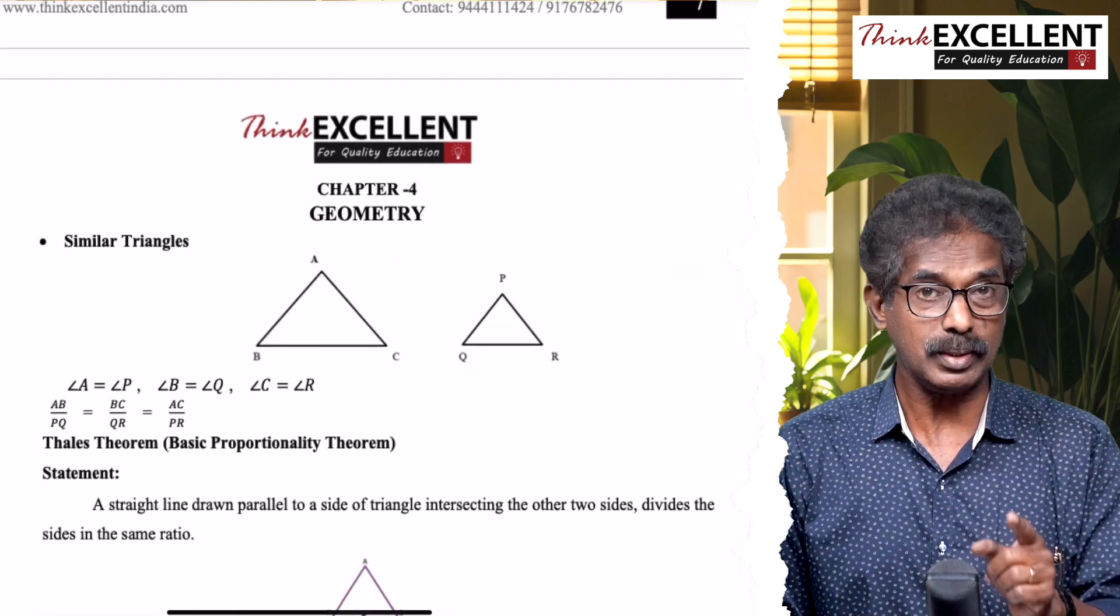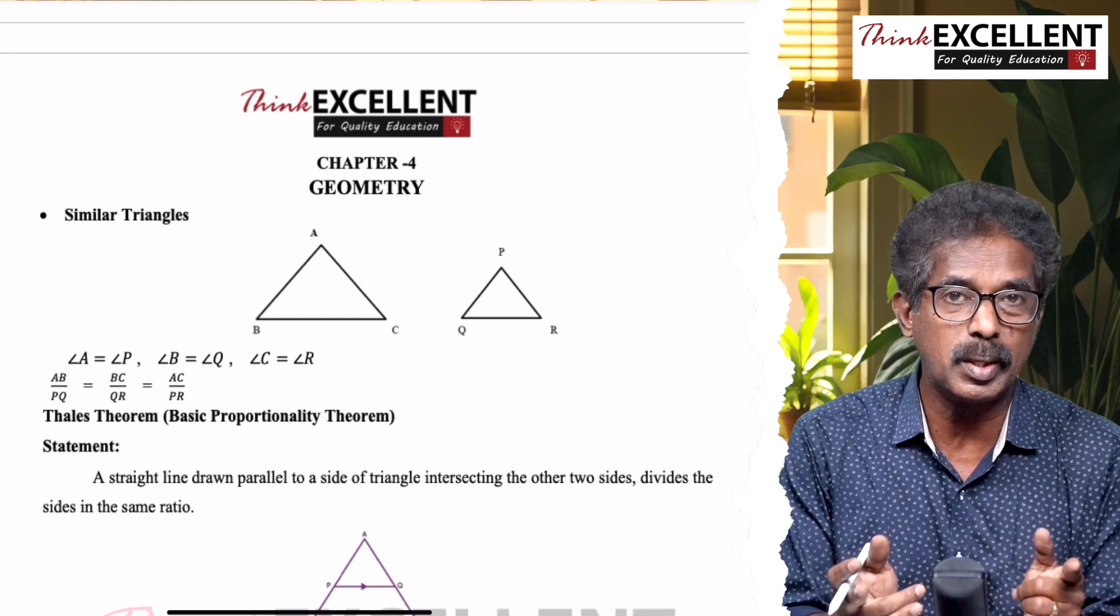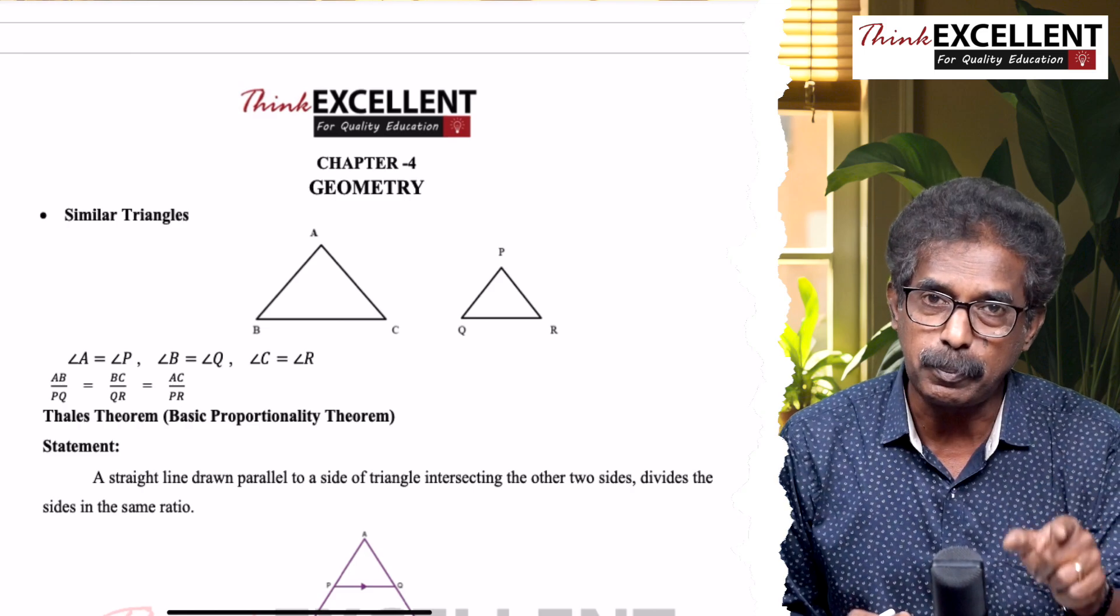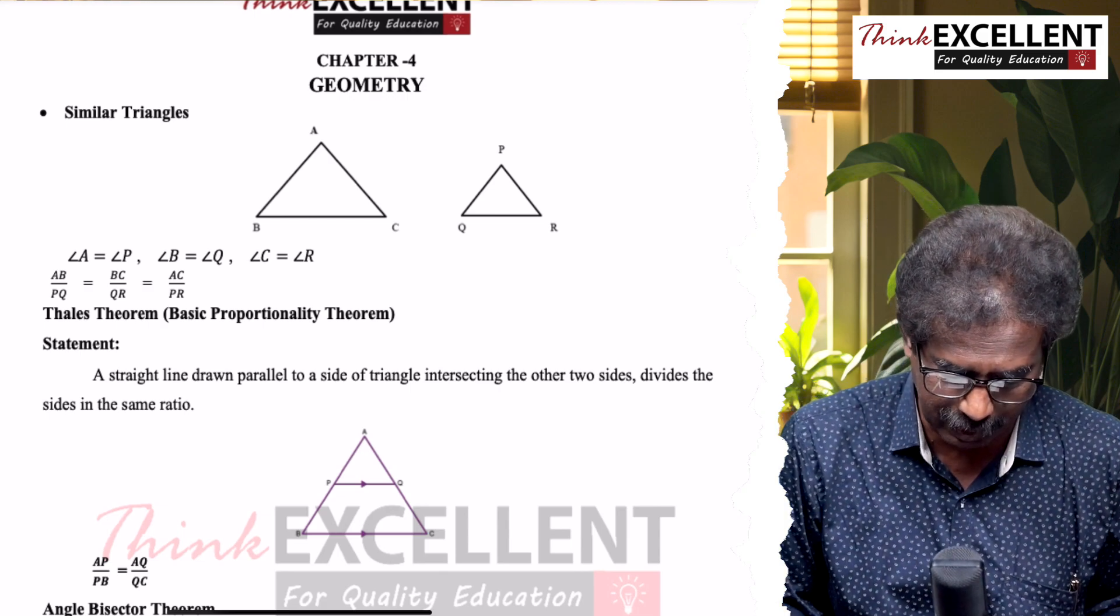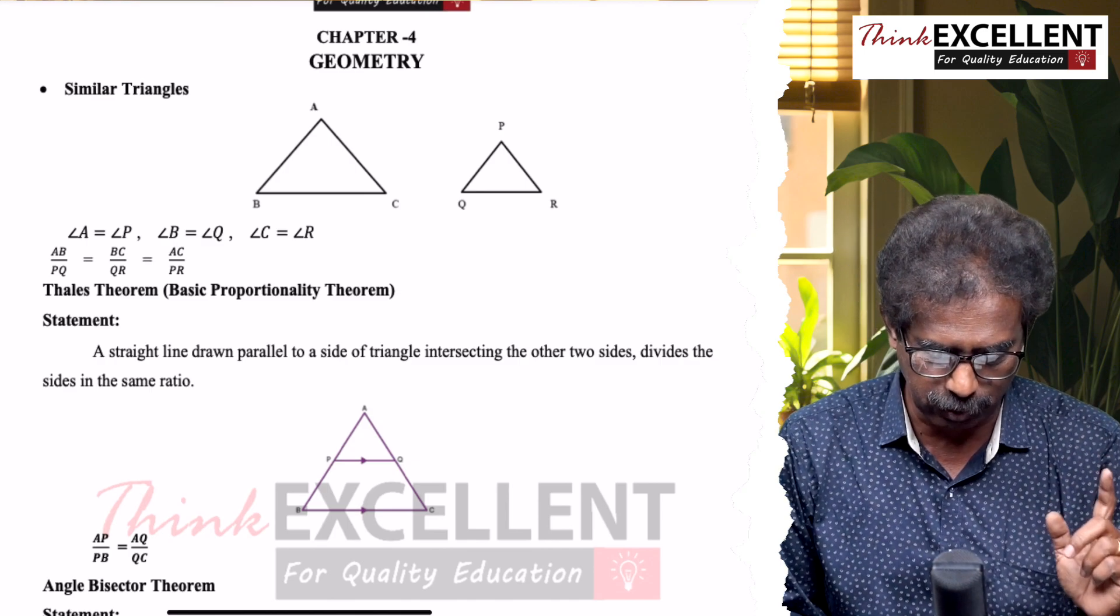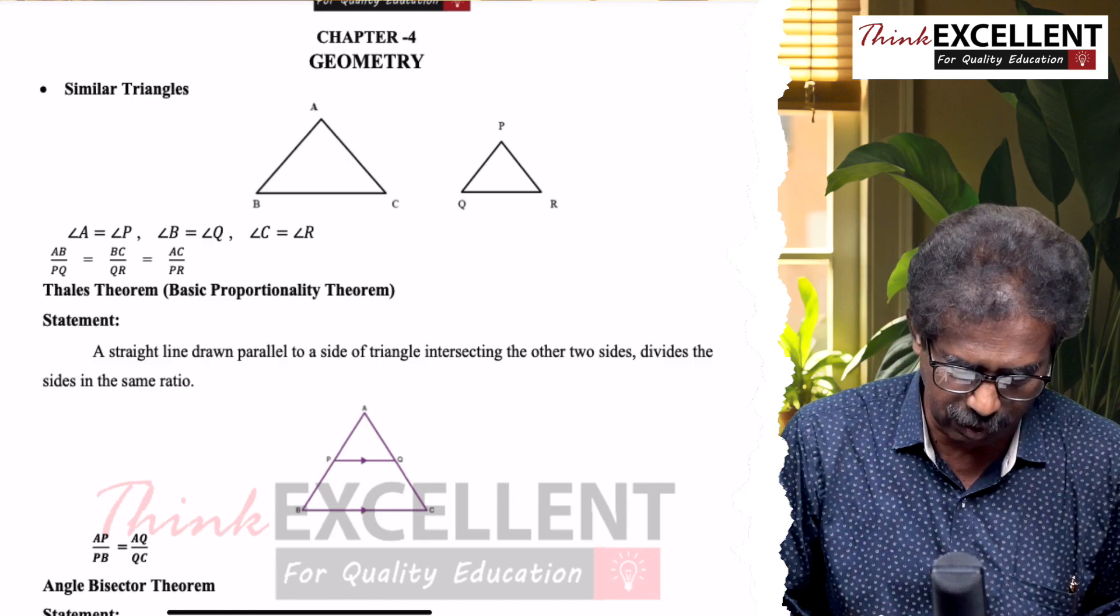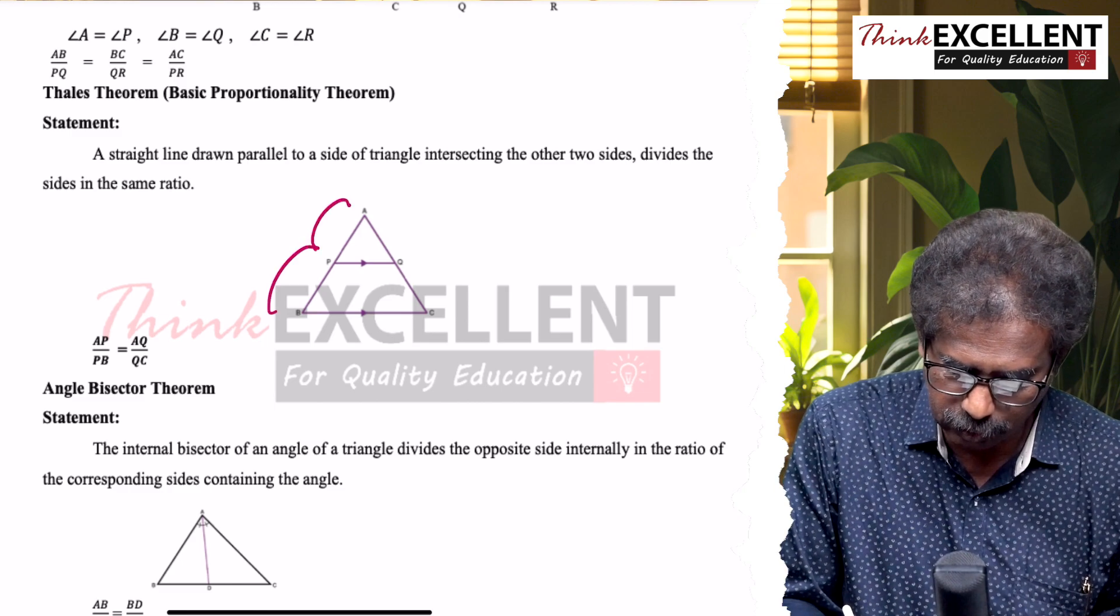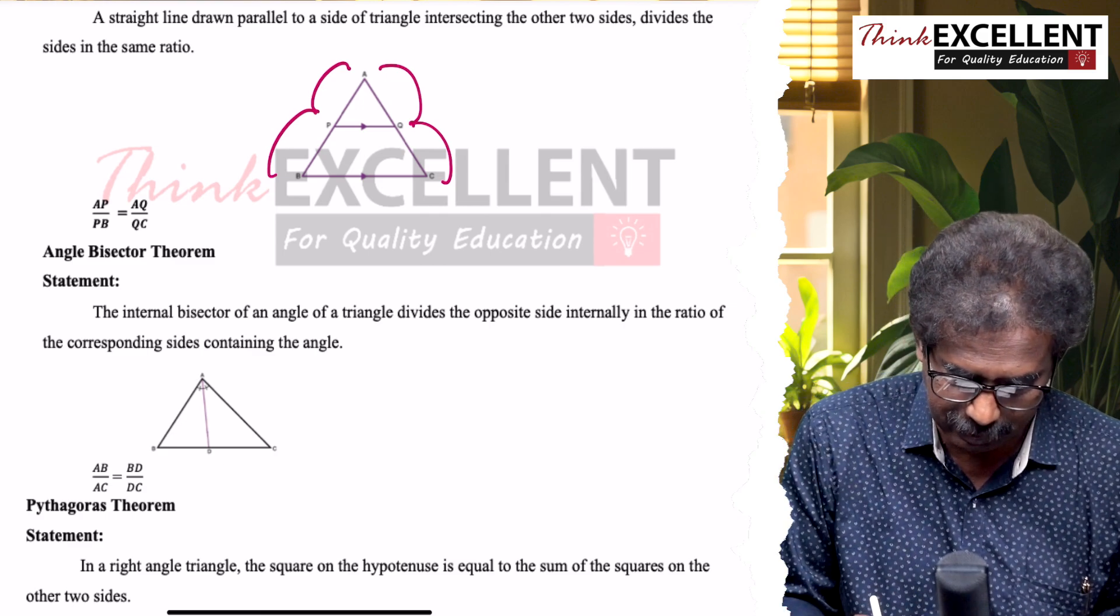Fourth chapter: similar triangles. First, similar triangles - congruent and similar, both are different. Similar means angles, corresponding angles equal, and the sides are proportional. Then the theorems - state and prove. Already you know statement and proof. Here I give the statements alone. Thales theorem, basic proportional theorem - another name Thales theorem. You have to study the statement: AP/PB = AQ/QC.